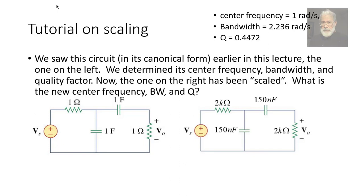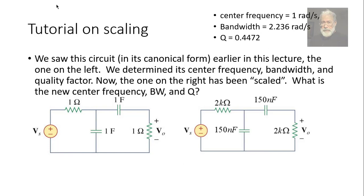But I need kf because kf will allow me to multiply the center frequency, 1 by kf. That would be the new center frequency. I multiply the old bandwidth, 2.236, by kf and I get the new bandwidth. How do I find kf? Well, I don't know kf and I know km and I have the change of capacitors between 1 and 150. That gives me an equation. Look.